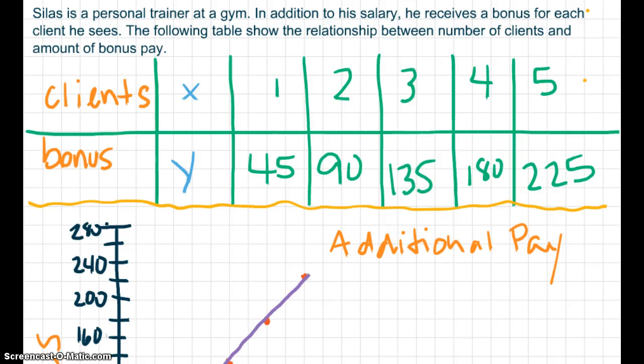Silas is a personal trainer at the gym. You probably weren't aware of that. In addition to his salary, he receives a bonus for each client he sees. The following table shows the relationship between number of clients and the amount of bonus pay. So you can see that clients, when we graph it, will be represented by X on our graph and bonus will be represented by Y.